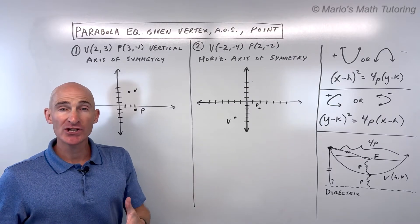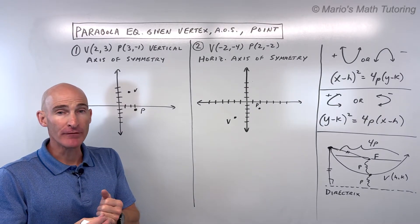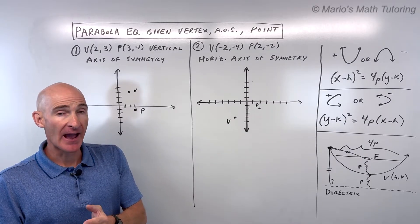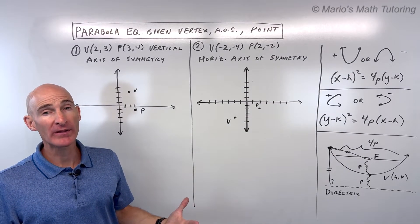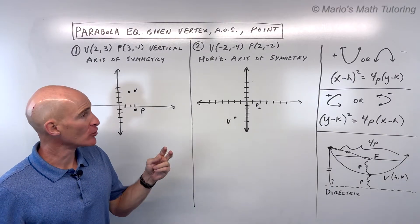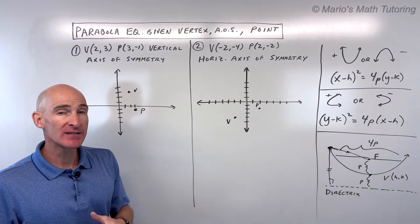In this video, you're going to learn how to write the equation of a parabola when you're given the vertex, the axis of symmetry, whether it's vertical or horizontal, and then another point that's on that parabola. So we're going to go through two examples together. Let's dive in.